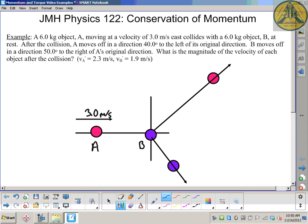Object A moves off a direction 40 degrees to its original position. Object B goes 50 degrees relative to A's original direction. The fact that they add up to 90 degrees is just coincidence. It's not important for other problems.